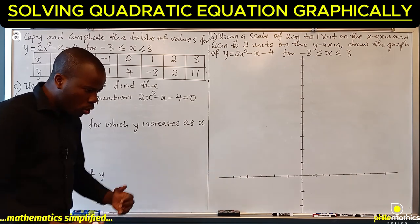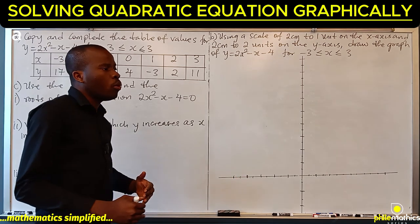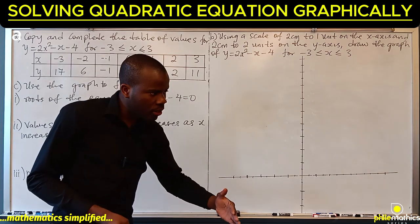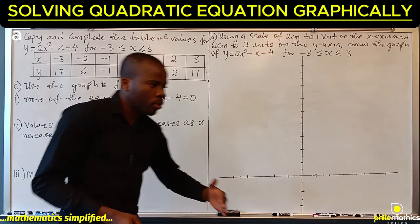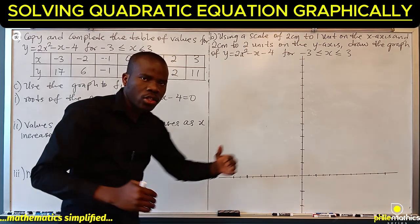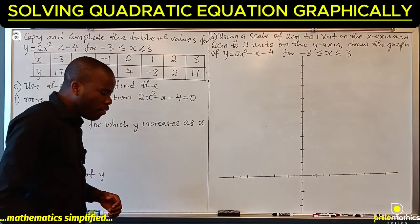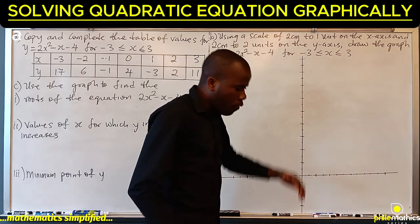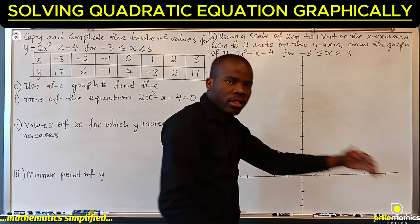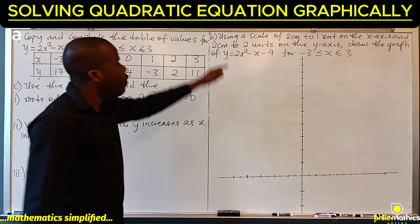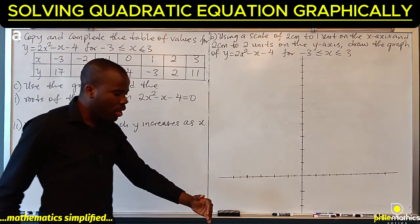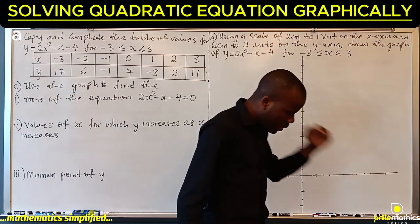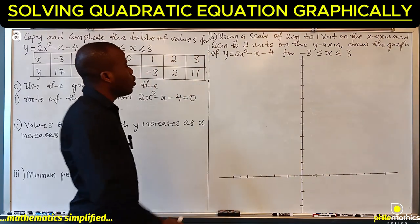In your graph, 5 little boxes is 1cm, so 10 little boxes is 2cm. For the x-axis, every 10 boxes represents 1 unit: the next 10 boxes is 2, the next is 3, and so on. For the y-axis, every 10 boxes you count is 2, the next 10 boxes is 4, the next is 6, and so on.